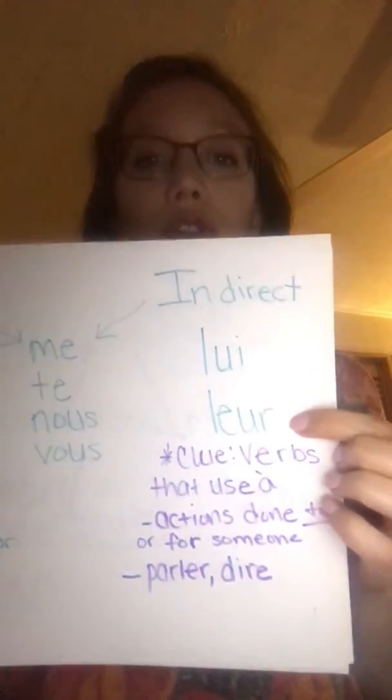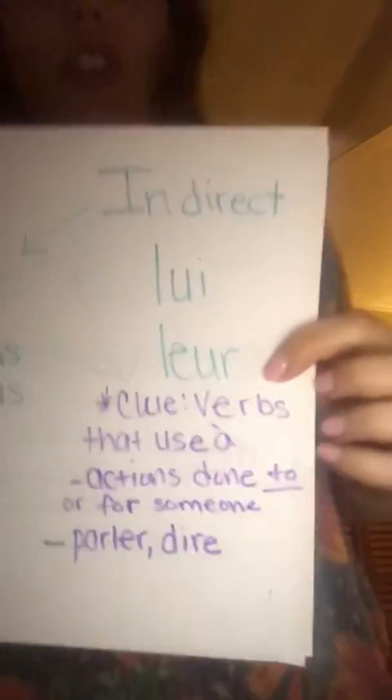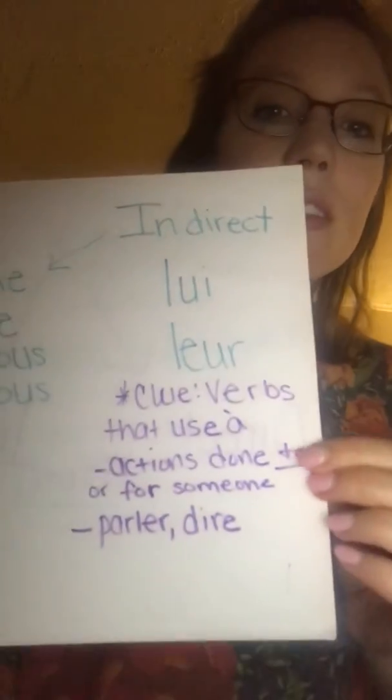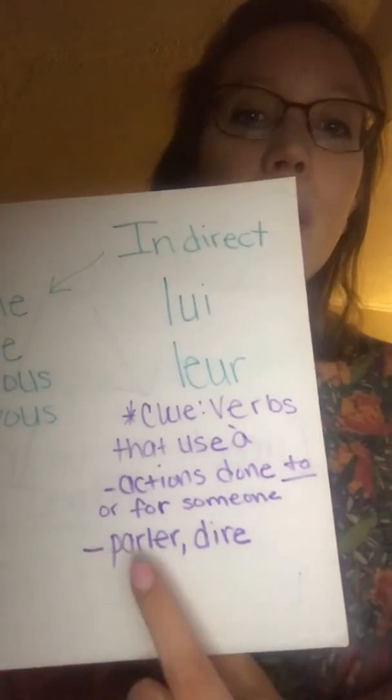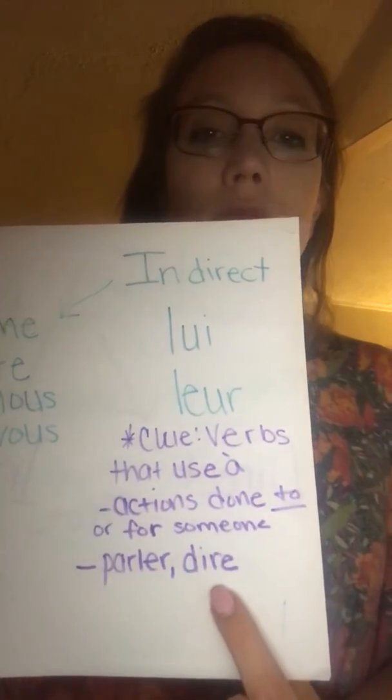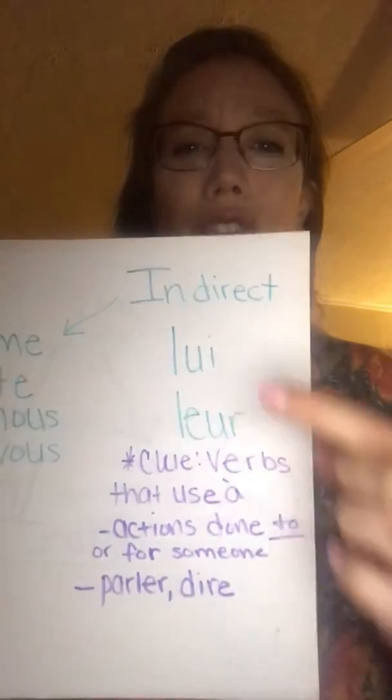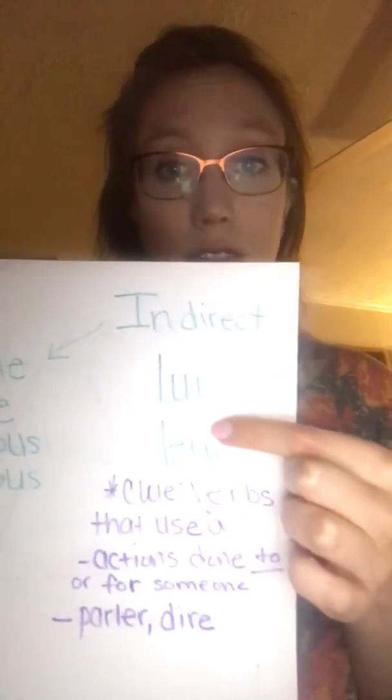Indirect object pronouns usually refer to people and they're used with verbs that are done to or for somebody, such as parler (to speak), dire (to say), or donner (to give). You can see here at the bottom parler and dire. You do not usually use these to replace objects.